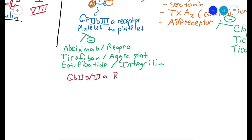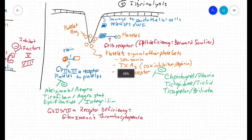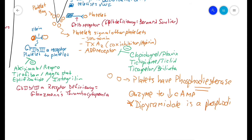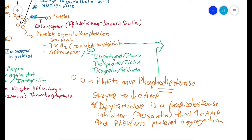There's an inherited disease of GP2b3a receptor deficiency called Glanzmann's thrombasthenia, and a GP1b receptor deficiency known as Bernard-Soulier disease. Platelets have a phosphodiesterase enzyme which decreases cyclic AMP in the platelet. Dipyridamole is a phosphodiesterase inhibitor known as Persantine. If you give a phosphodiesterase inhibitor, this increases cyclic AMP in the platelet and prevents platelet aggregation. Aggrenox is a combination of dipyridamole and aspirin.